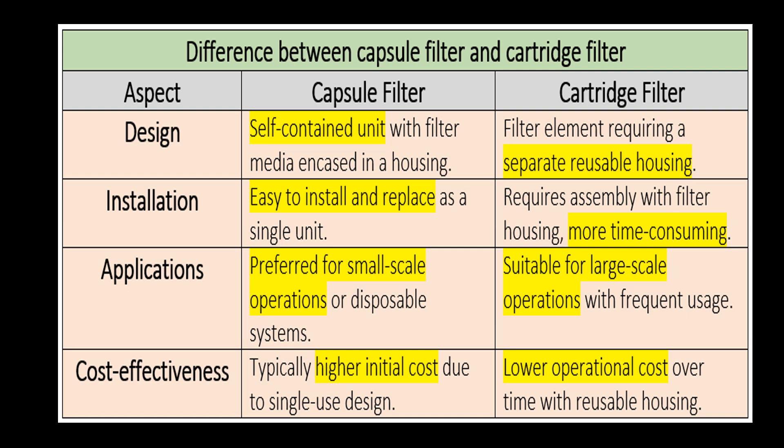The second aspect is installation. Capsule filters are easy to install and replace as a single unit, whereas cartridge filters require assembly with a filter housing, which makes it more time consuming. The third important aspect is applications. Capsule filters are preferred for small-scale operations or disposable systems, whereas cartridge filters are suitable for large-scale operations with frequent usage.